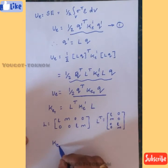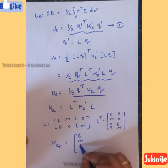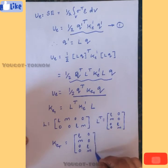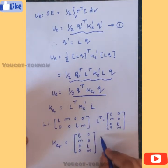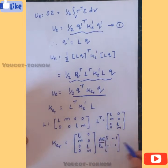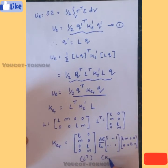For Ke_truss, write out: L_transpose = [l, 0; m, 0; 0, l; 0, m], Ke_dash = (AE/Le) * [1, -1; -1, 1], and L = [l, m, 0, 0; 0, 0, l, m]. Now multiply everything together.